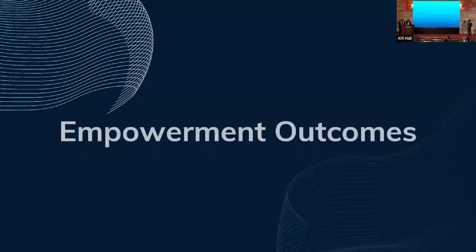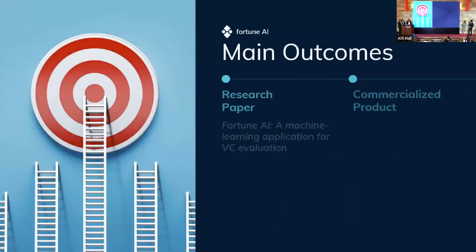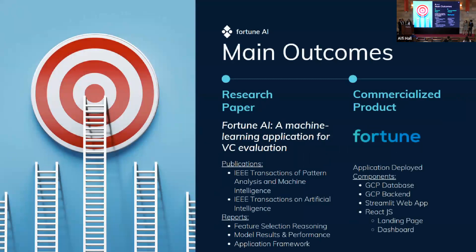Our first empowerment outcome is a research paper titled 'Fortune AI: A Machine Learning Application for VC Evaluation.' We're hoping to target publications like IEEE Transactions on Pattern Analysis and Machine Intelligence, and IEEE Transactions on Artificial Intelligence. The paper reports on feature selection reasoning, model results and performance, and application framework. Our second empowerment outcome is the commercialized product, Fortune AI. We've deployed most of the project — including the database backend and the ML web app — but held off on deploying the front end to ensure compliance with Crunchbase's legal terms.